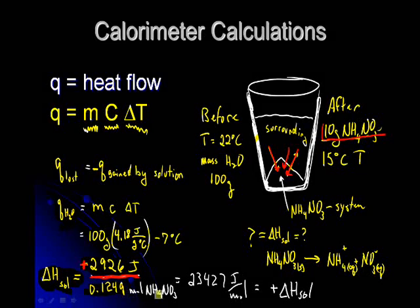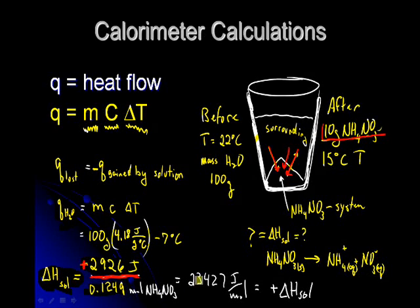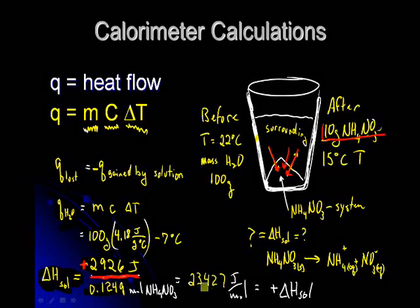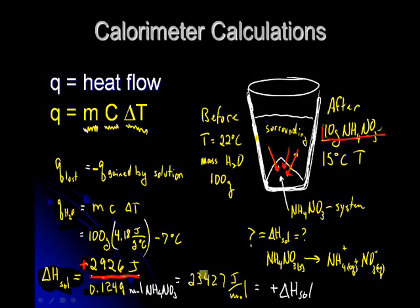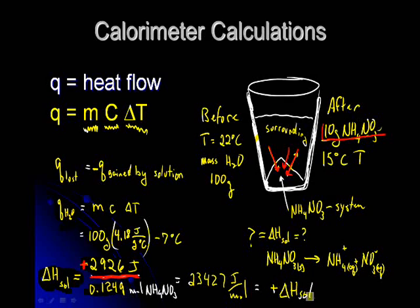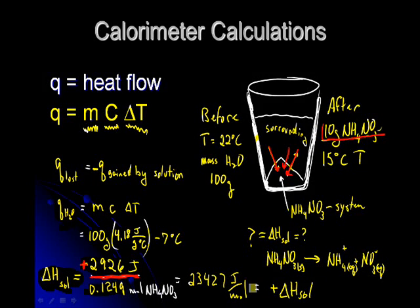So to calculate the change in enthalpy of solution, we're going to divide the number of joules by the number of moles. We get joules per mole, and that's going to end up being 23,427 joules per mole, or 23.4 kilojoules. That would be the enthalpy of the solution for ammonium nitrate.